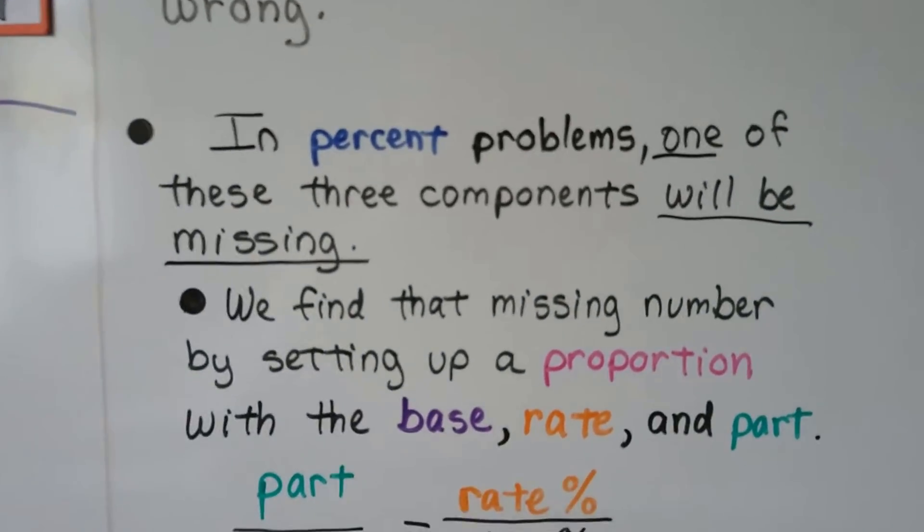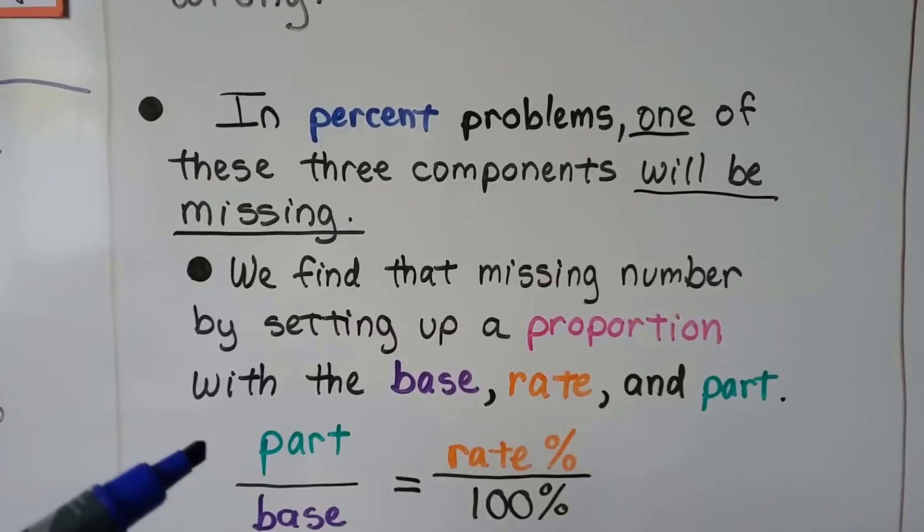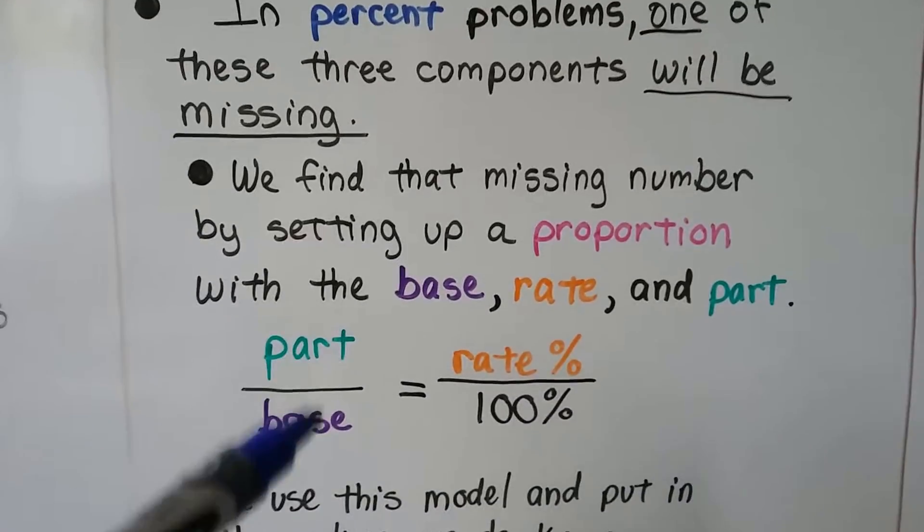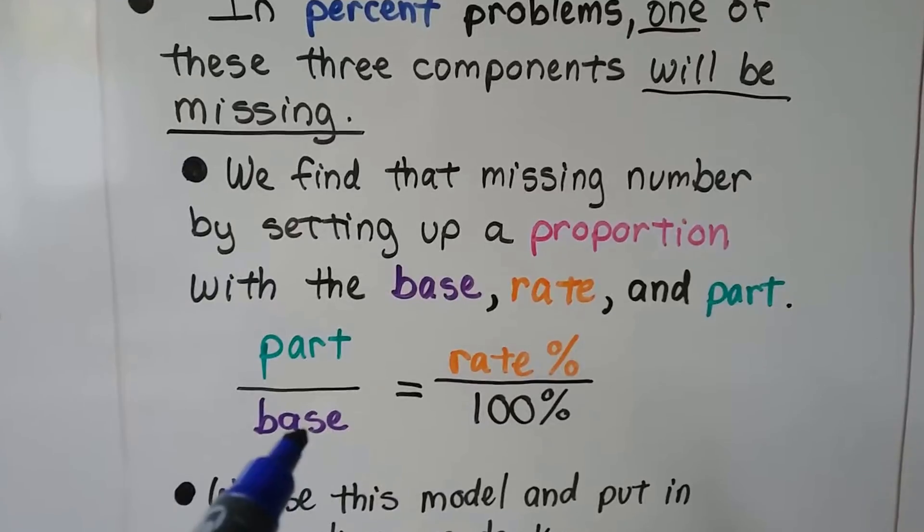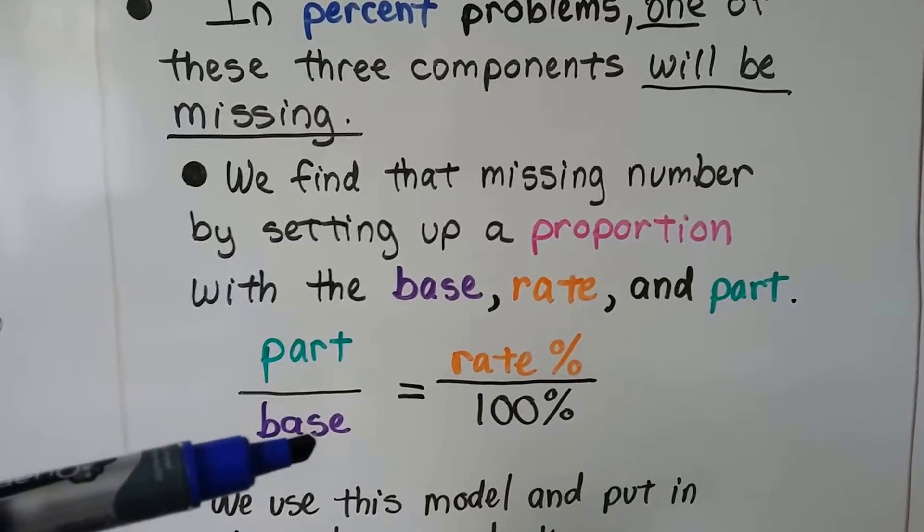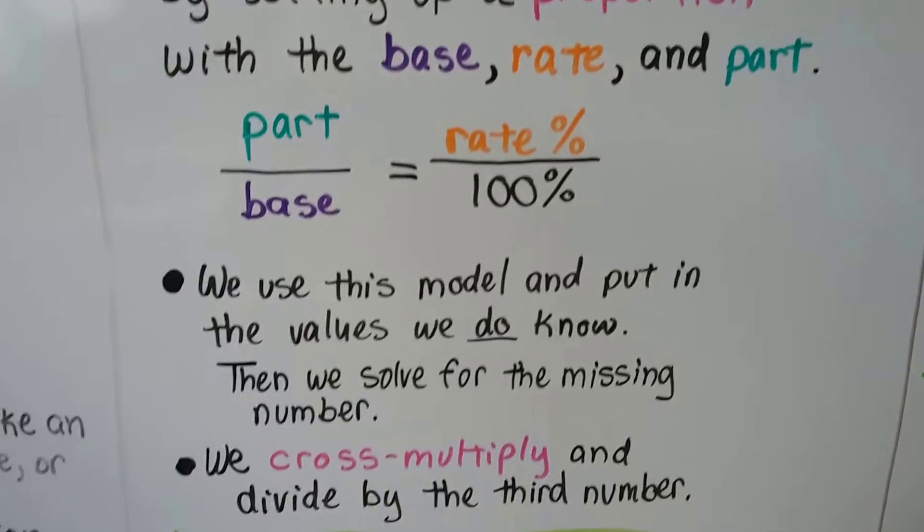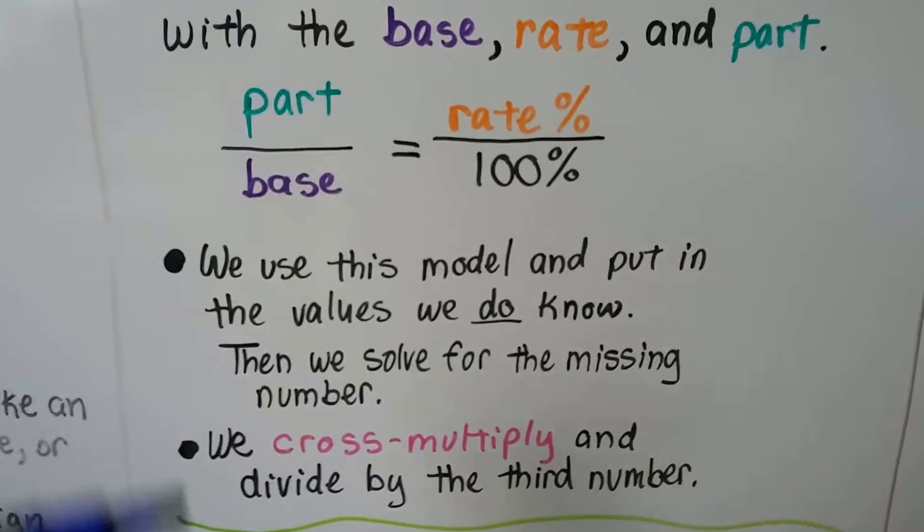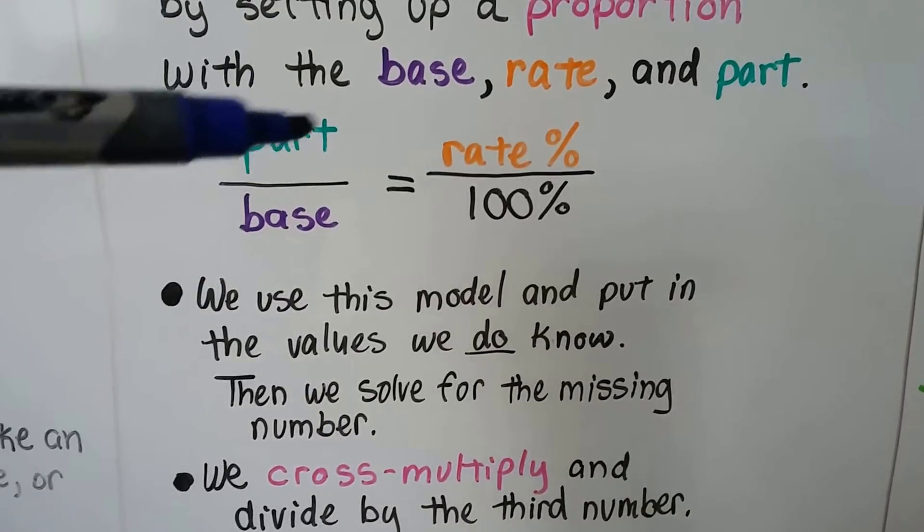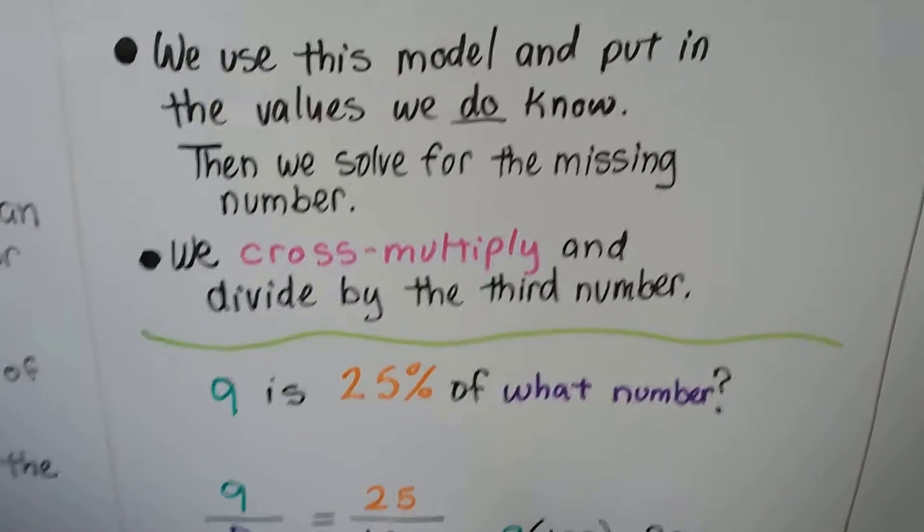In percent problems, one of these three components will be missing. We find the missing number by setting up a proportion with the base, the rate, and the part. You're going to want to write this somewhere in your notes or your spiral, because this is how you solve a percent problem. You put the part, and then you put the base as the denominator, and it's going to equal the percentage rate over 100. We use this model and put in the values we do know, and then we solve for the missing number. Maybe the part's missing, or maybe the base is missing, or maybe the rate's missing. We can cross multiply and divide by the third number.